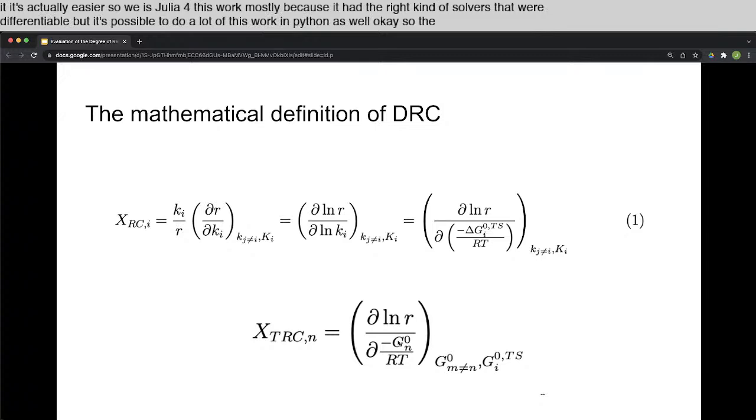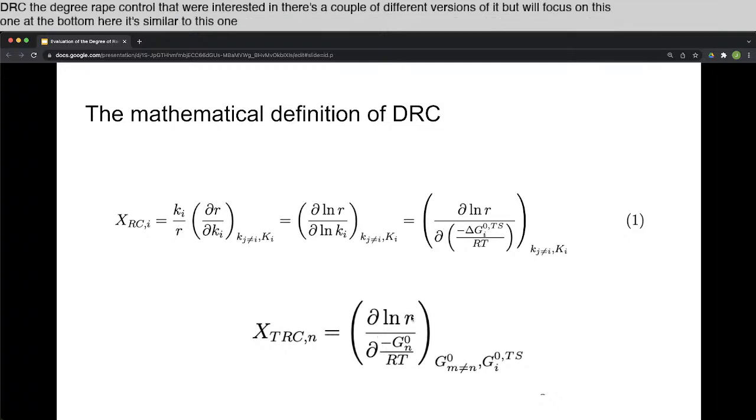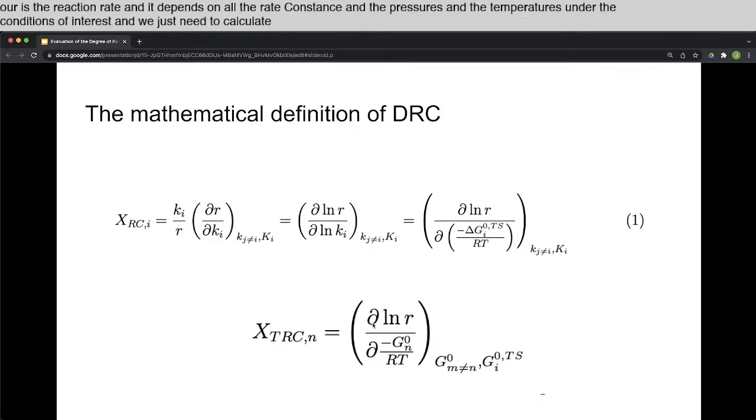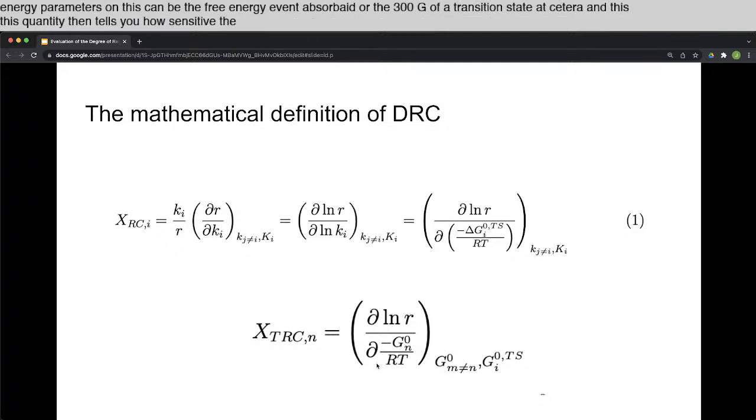So the mathematical definition of the DRC, the degree of rate control that we're interested in, there's a couple of different versions of it, but we'll focus on this one at the bottom here. Basically, R is the reaction rate, and it depends on all the rate constants and the pressures and the temperatures under the conditions of interest. And we just need to calculate the derivative of the log rate with respect to one of these free energy parameters. This can be the free energy of an adsorbate or the free energy of a transition state.